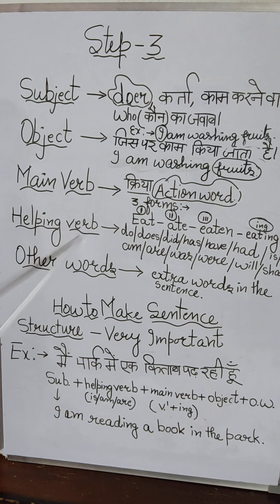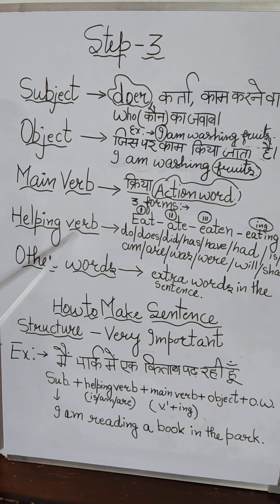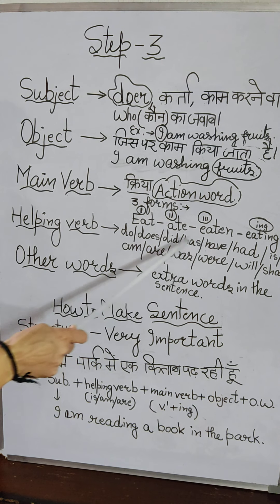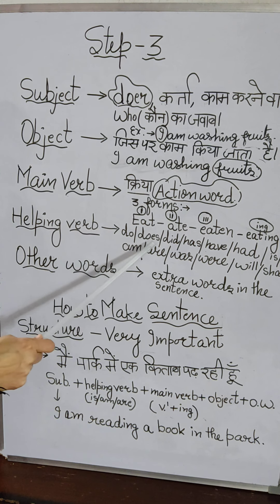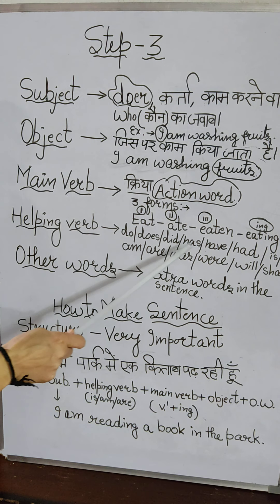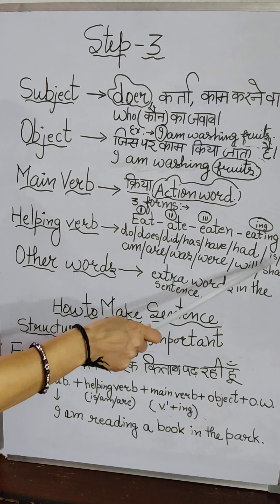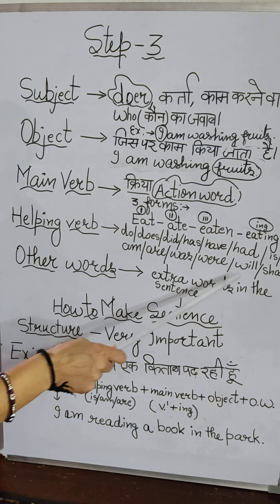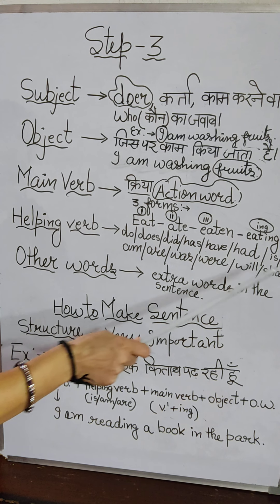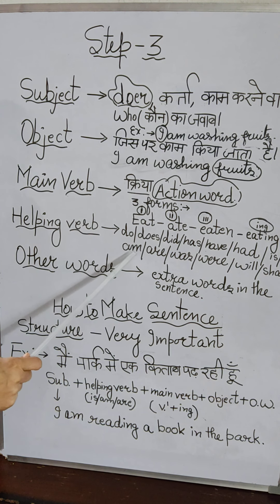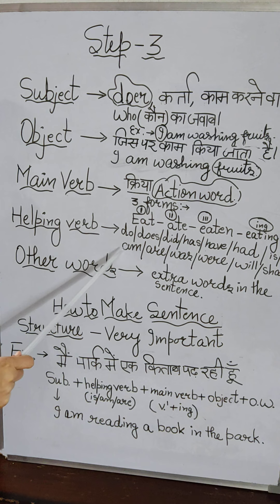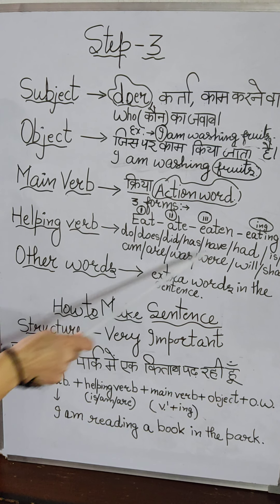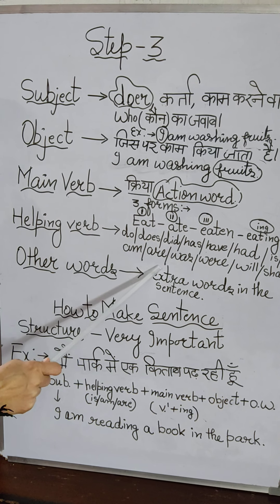Helping verb — I have made my previous video and I have told you: do, does, did, has, have, had, is, am, are, was, were, will, shall. These are the helping verbs.